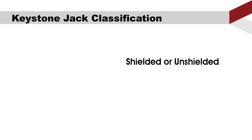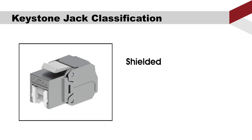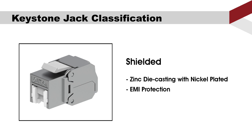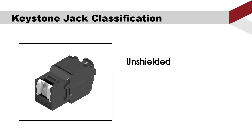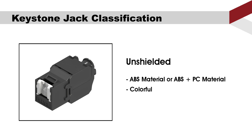Fourth, shielded or unshielded. It's very easy to tell the difference. The shielded type is covered with a metal shield or the body is made of zinc alloy, which provides excellent EMI protection against surrounding environments. The unshielded Keystone Jack body is made of ABS material, and it's colorful.